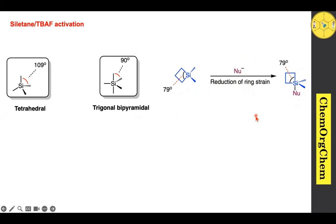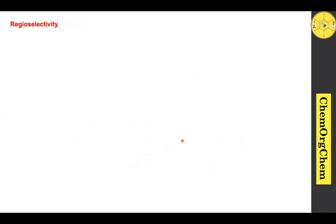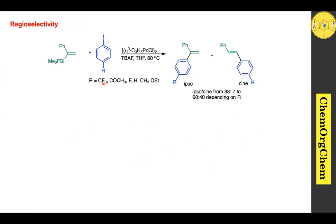This penta-coordinate species is ready for transmetallation to produce the corresponding product. An example of this type of activation is a vinyl-substituted silacyclobutane reacting with an iodo compound under TBAF and palladium(0) conditions to produce the corresponding vinyl-substituted product. Now let's discuss selectivity, starting with regioselectivity.